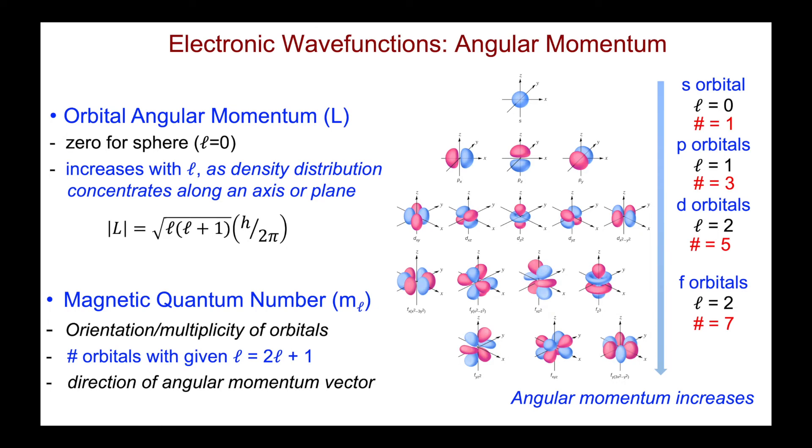We haven't really mentioned too much about the magnetic quantum number, m sub l. Suffice it to say that it reflects or indicates the orientation and multiplicity of the orbitals. And the number of orbitals with a given l is actually equal to 2l plus 1. So, for l is zero, there's one orbital. For l is one, we have the three p orbitals. For l is two, we have five d orbitals. l is three, we have seven f orbitals, et cetera. It also reflects the direction of the angular momentum vector.